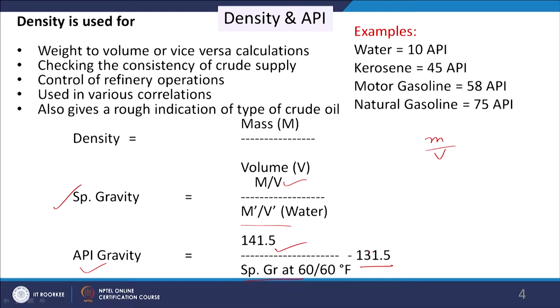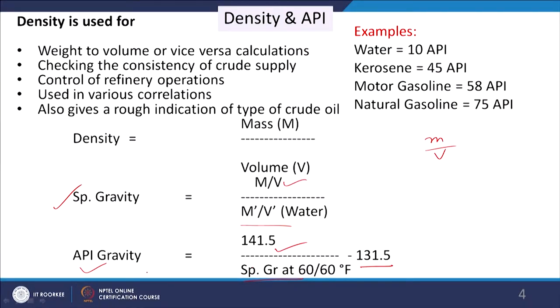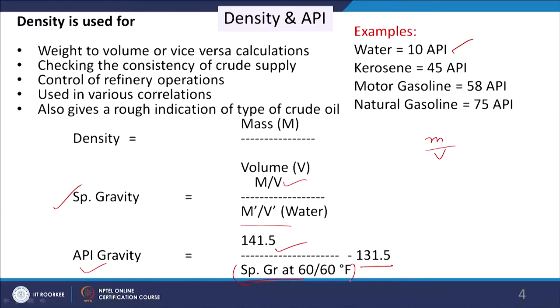API gravity is used to clearly understand the difference between the fractions of petroleum crude. For example, if we consider water, the API gravity will be 141.5 minus 131.5, which is almost 10. But if a substance is lighter than water, specific gravity will be less, so the result will be more than 10. For kerosene we get 45 API, for motor gasoline we get 58 API, and for natural gasoline we get 75 API. So the higher the API, the lighter the fraction or product being considered.